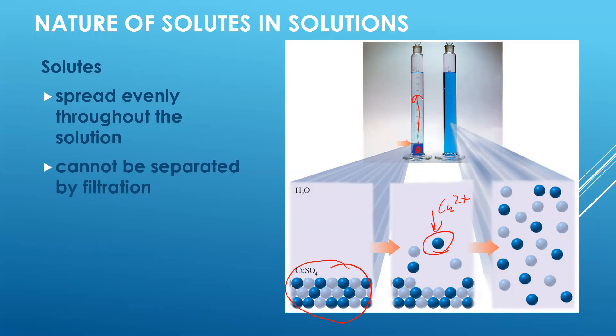Solutions can't be separated by filtration because the solute particles — in this case Cu²⁺ and sulfate ions — are too small and would pass through the pores of a filter. However, they can be separated by evaporation or distillation, taking advantage of different physical properties. The solute, copper(II) sulfate, has a much higher boiling point than the solvent water, so you can easily boil off the water and separate it from the dissolved solute.